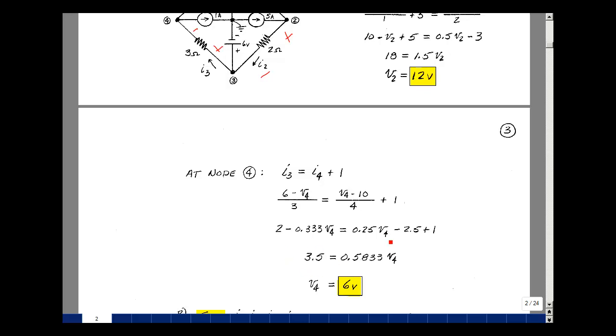Put this on the other side of the equation, I'm going to add 0.33 to 0.25, and I get 0.5833 times V4, and then just dividing through, I get that V4 is equal to 6 volts.